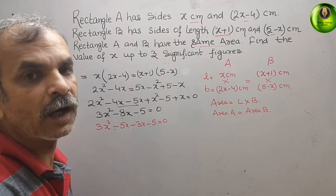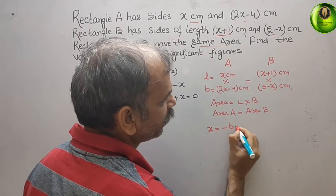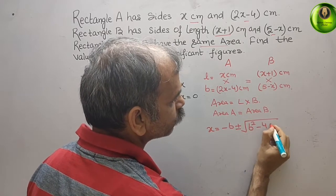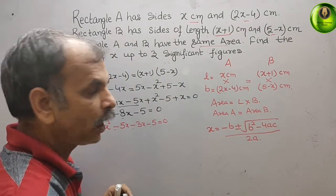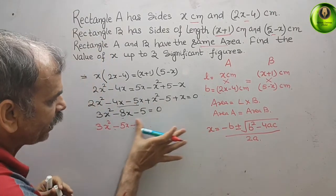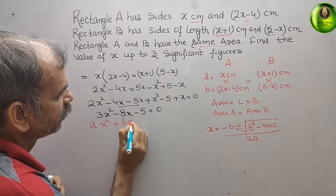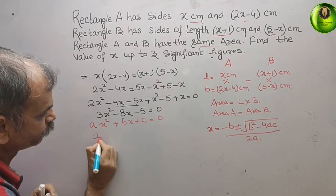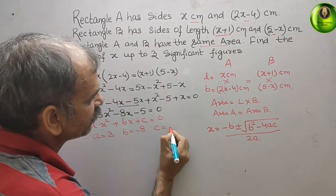Therefore, we will go for the quadratic formula: x equals minus b plus or minus root under b squared minus 4ac, all over 2a. We write the standard form of the quadratic equation ax squared plus bx plus c equals 0. Comparing, a is 3, b is minus 8, and c is minus 5.